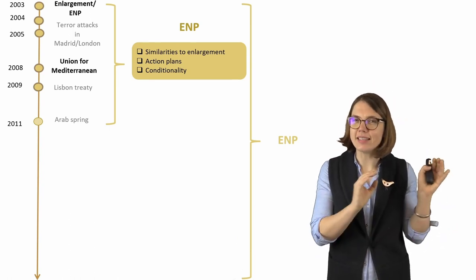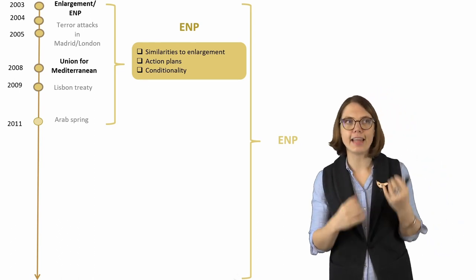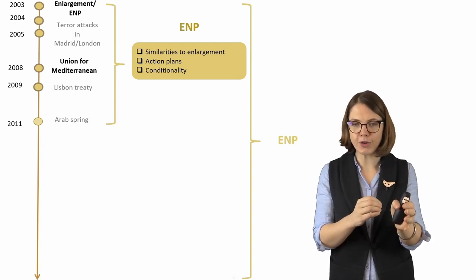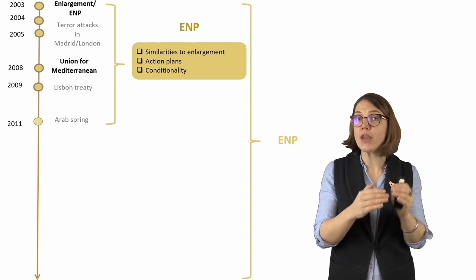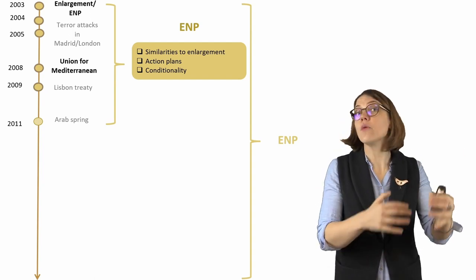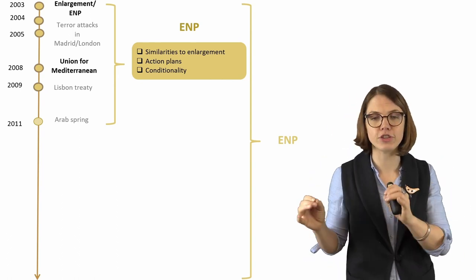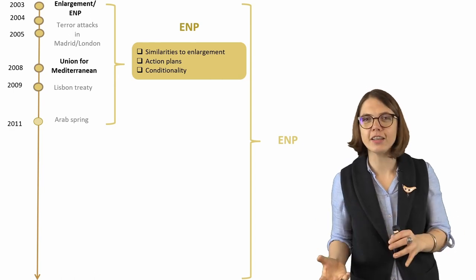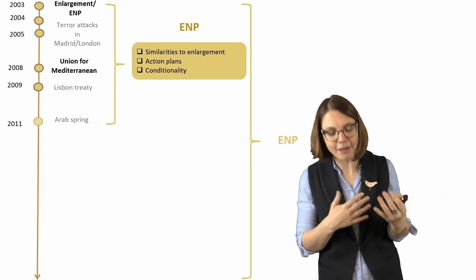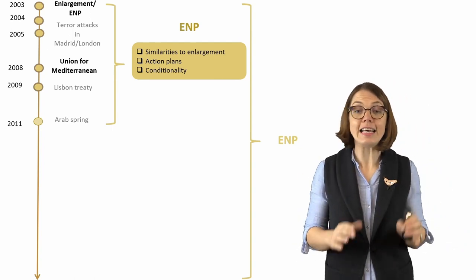Though called the Neighborhood Policy — so the Mediterranean framing was gone — it was structurally similar to accession policy. Countries would sign association agreements, agree on partnership priorities, and make midterm action plans with EU support for implementing outlined reforms. It was somewhat like pre-accession policy, just without a membership perspective. The carrot was simply not big enough to really push countries toward certain reforms.